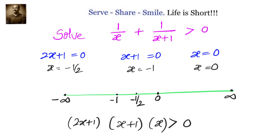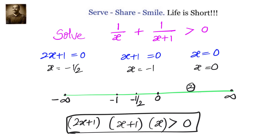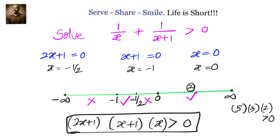Let us substitute a value from each interval. Between 0 and infinity, let us take x = 2. Substituting: (2×2+1)(2+1)(2) = 5 × 3 × 2, which is greater than 0. That is perfectly correct, so the interval (0, ∞) is part of our solution.